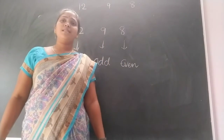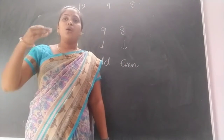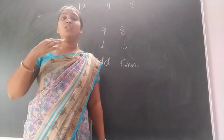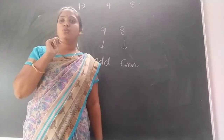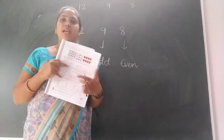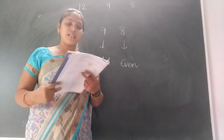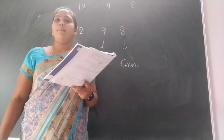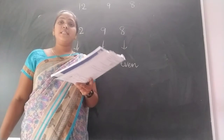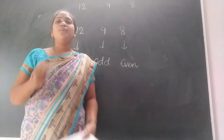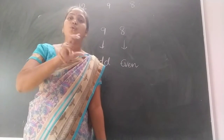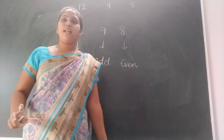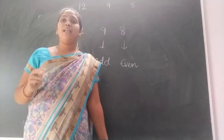In previous classes, we learnt already, children. What are even numbers? The things that can be arranged in pairs — pairs means 2-2 objects. The objects that can be grouped in 2s are called even numbers. And if we cannot arrange objects in groups and any object is left, that is an odd number.